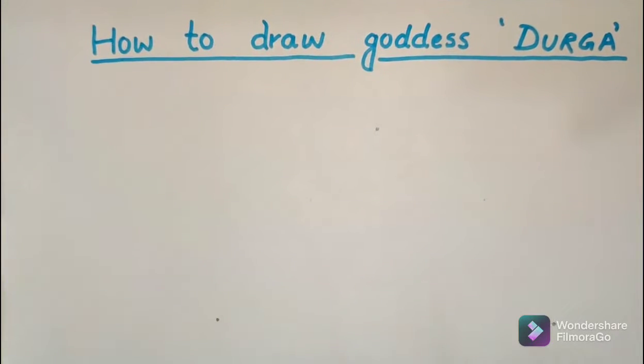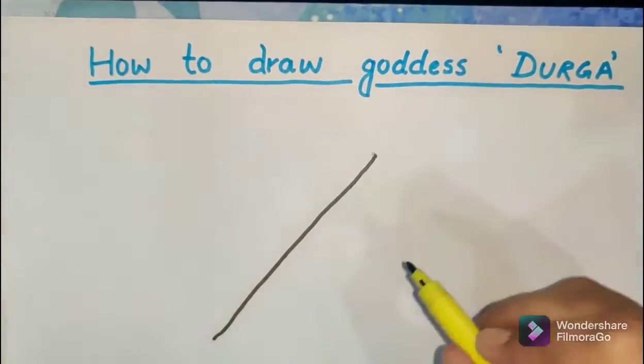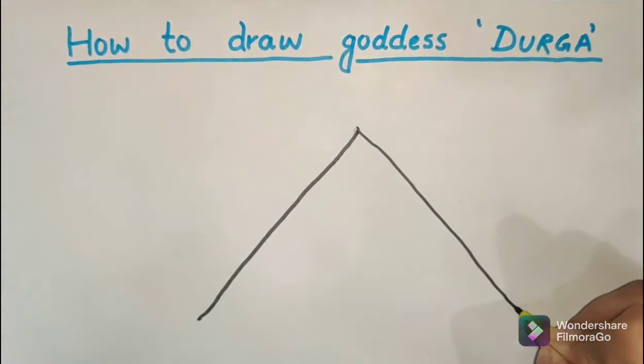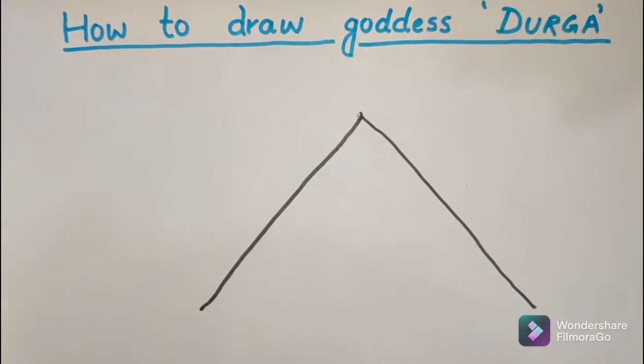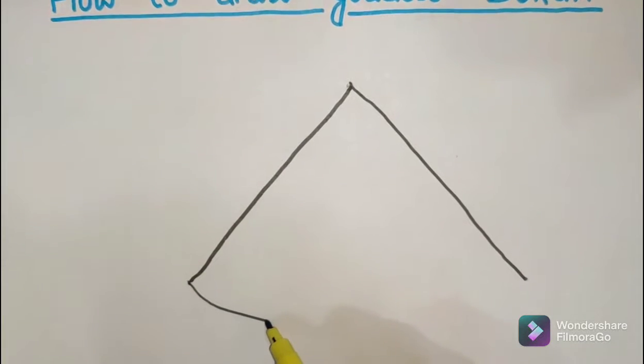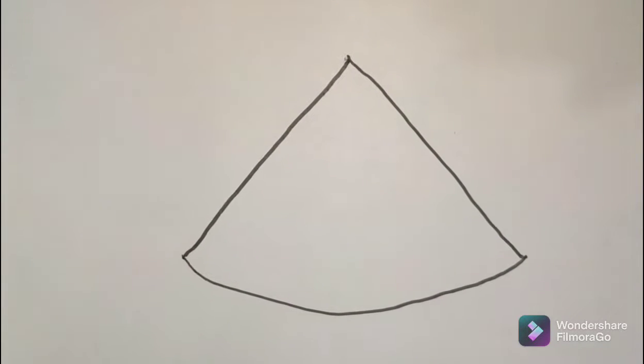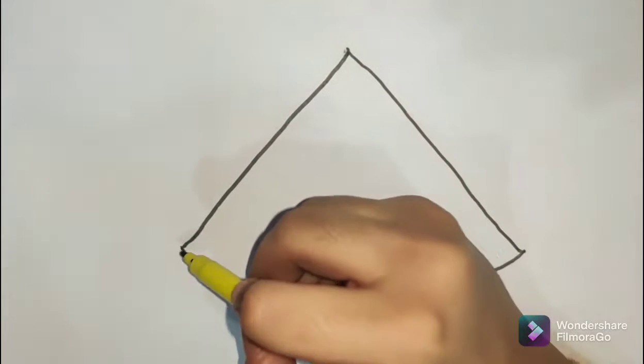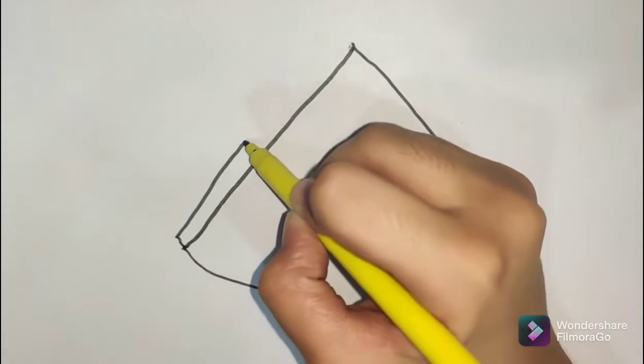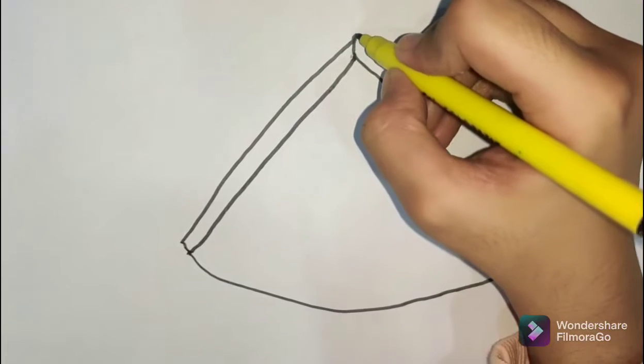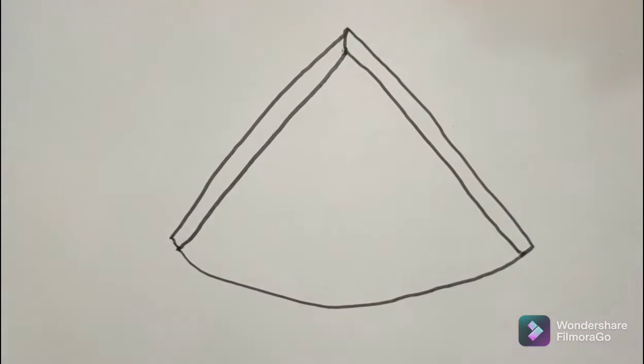Let's start. First we got to join all of these dots. We need to make slanting lines like this, and they need to be even. Now we need to make a bowl like this. Then we need to make another slanting line, another big one like this. Same on the other side.